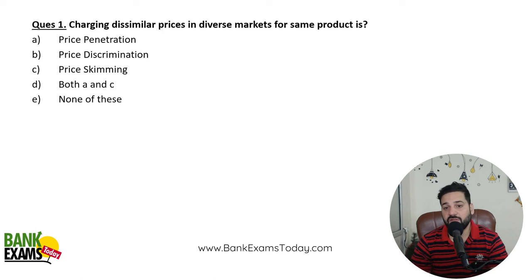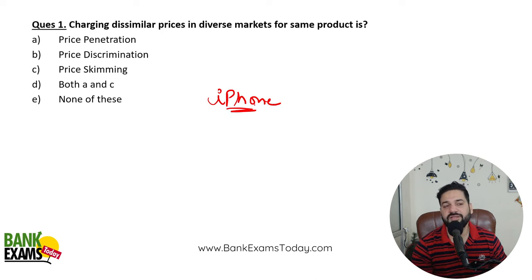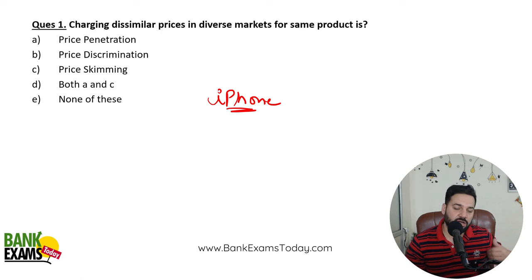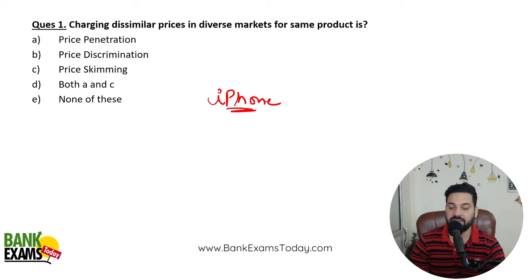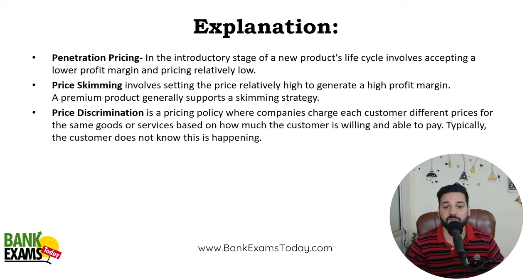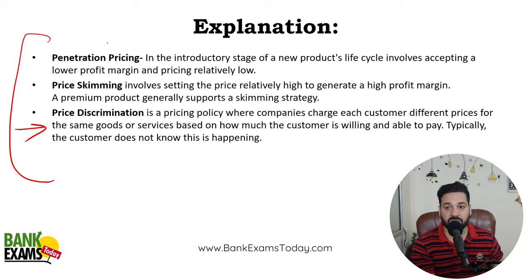Charging dissimilar prices in a diverse market for the same product is known as price discrimination. A good example would be iPhones — Apple charges different prices in different markets. For example, iPhones are produced in India but are still more expensive in India compared to the US. Price discrimination means charging different prices to different customers.